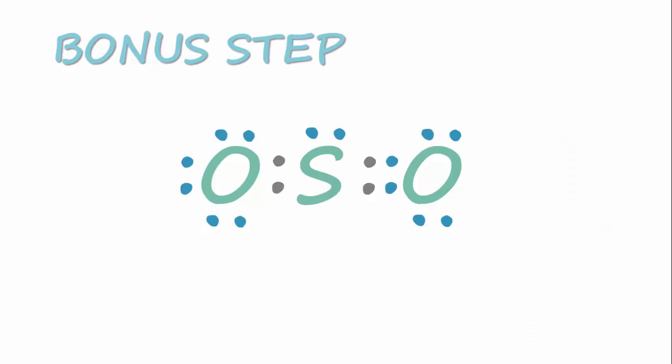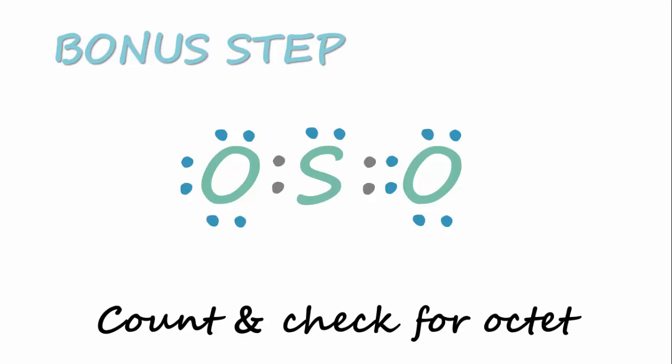So that's it. We have drawn the Lewis structure for SO2. Just to be extra sure, you can count the total number of electrons in the completed Lewis structure to make sure that it is equal to the number of valence electrons calculated in step 1.